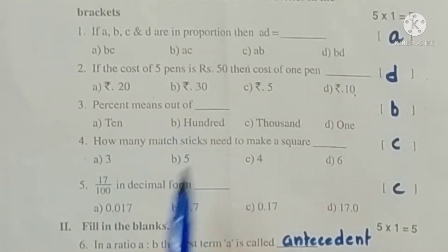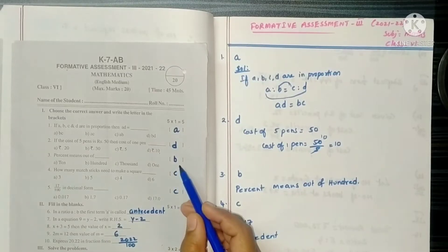Percent means percent is out of 100. So 100, option B.